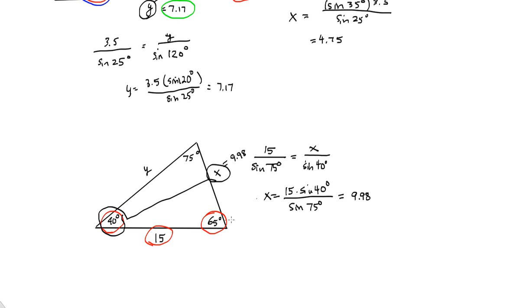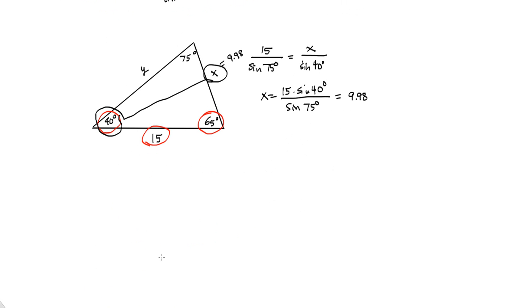Now again, you cannot use the Pythagorean theorem because it's not a right triangle. And I wouldn't use the 9.98 that we just got because that could potentially be wrong. And you don't want to propagate your error. And it's also a rounded answer. So we're going to start again with the information that was given. 15 over the sine of 75 degrees equals, and now we're going to look at y, the other side. y over its opposite angle, the sine of its opposite angle, which is 65 degrees. When that's rearranged, meaning we either cross multiply or multiply both sides by the sine of 65, you should be getting 15 times the sine of 65 degrees over the sine of 75 degrees. And when you do that math, you should get about 14.07 units.